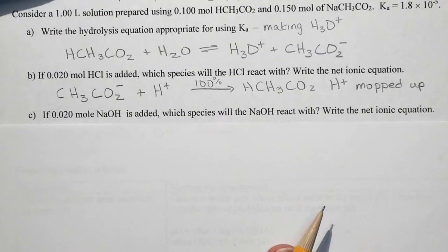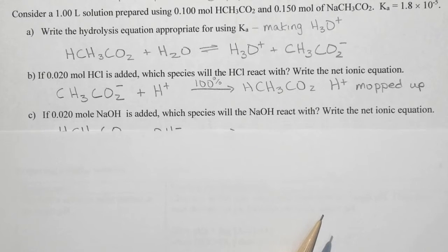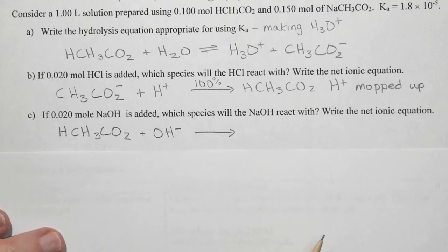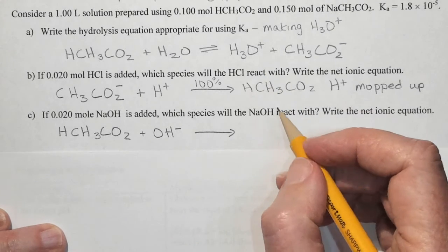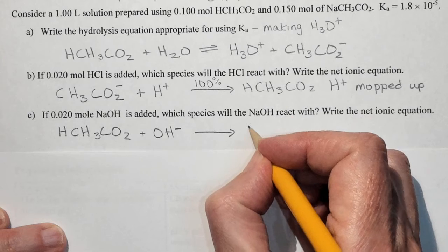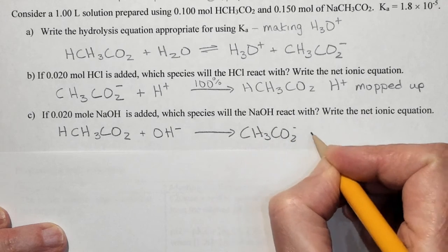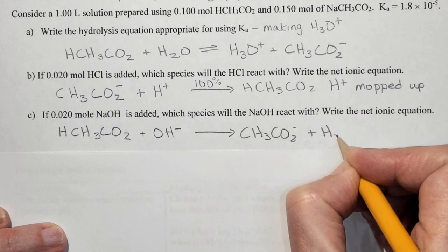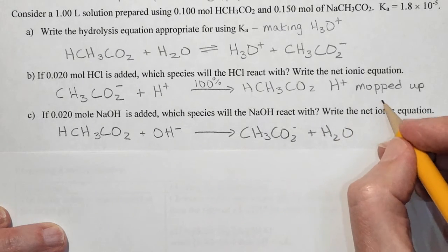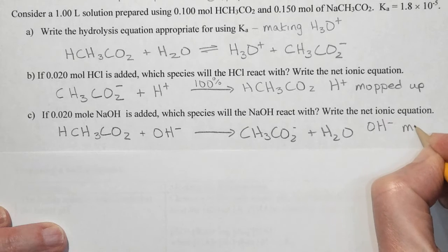Likewise if we add 0.2 moles of sodium hydroxide to the reaction, the sodium hydroxide is going to react with the acetic acid instead. So now we are going to regenerate the acetate ion and we are going to mop up the hydroxide. So OH minus is mopped up.